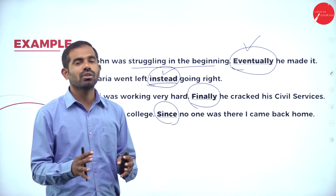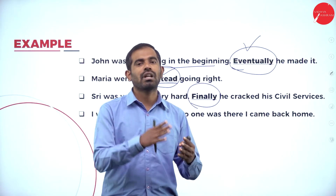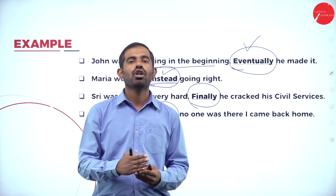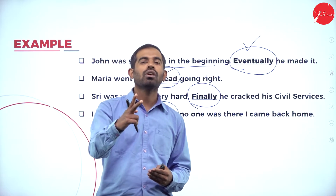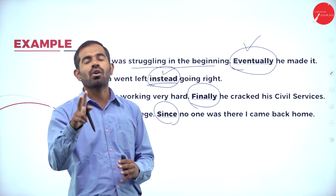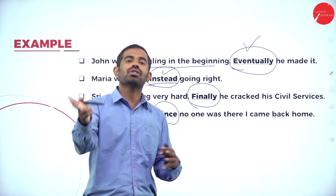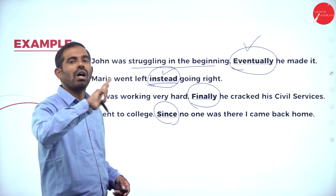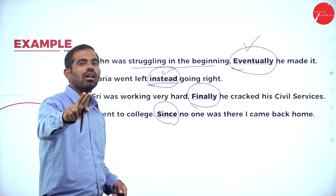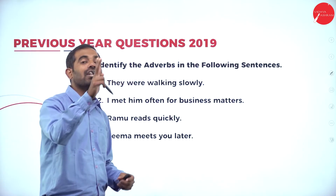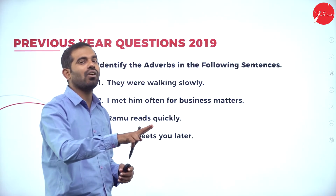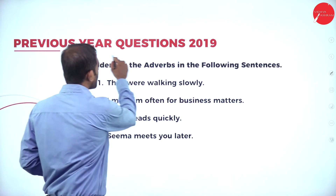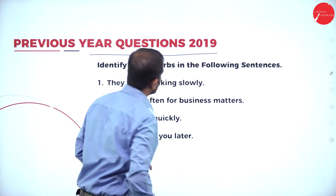So there are seven types of adverbs in total. Five are the main types, but to be on a safer side I have added two more. In your examination, they are not going to ask you to fill in blanks — they would ask you to underline, identify, and write them in your answer script. So these are the previous year's questions.